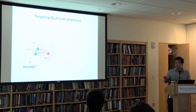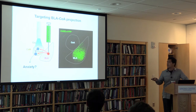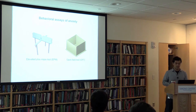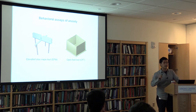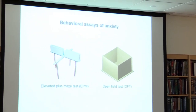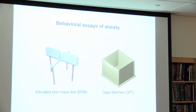To test this hypothesis, we expressed channelrhodopsin in the basolateral amygdala and delivered light on top of the central amygdala to preferentially stimulate BLA projections to the CeL. To assess anxiety during these optogenetic manipulations, we performed the elevated plus maze test and the open field test—the two most widely used anxiety assays for rodents. Mice have an inherent desire to explore novel environments but also tend to avoid heights and open spaces associated with predators. Increased time in the open arms or the center of the open field is interpreted as lower anxiety.